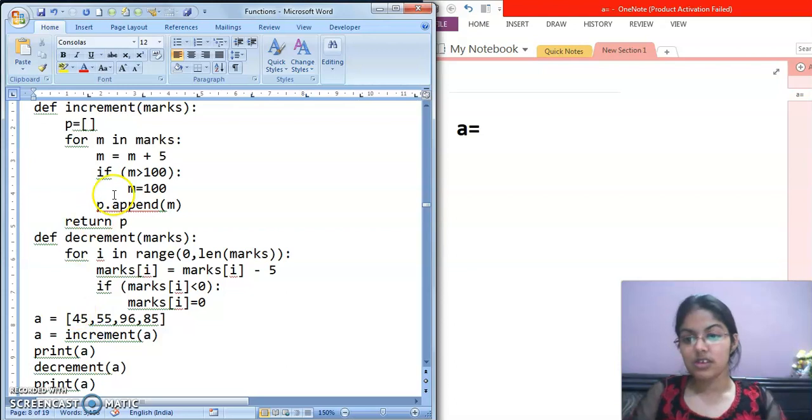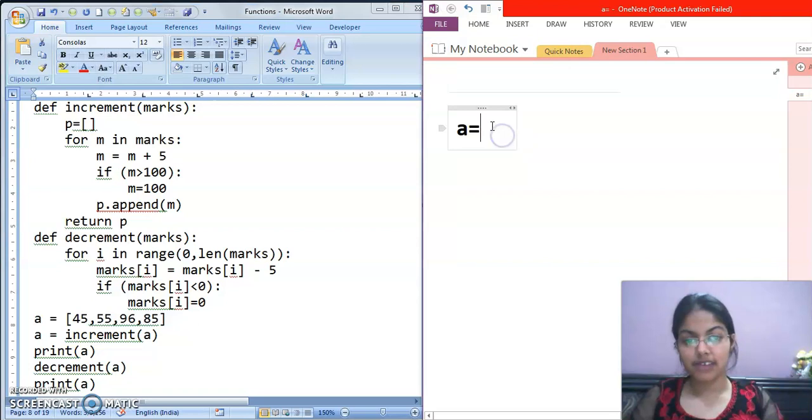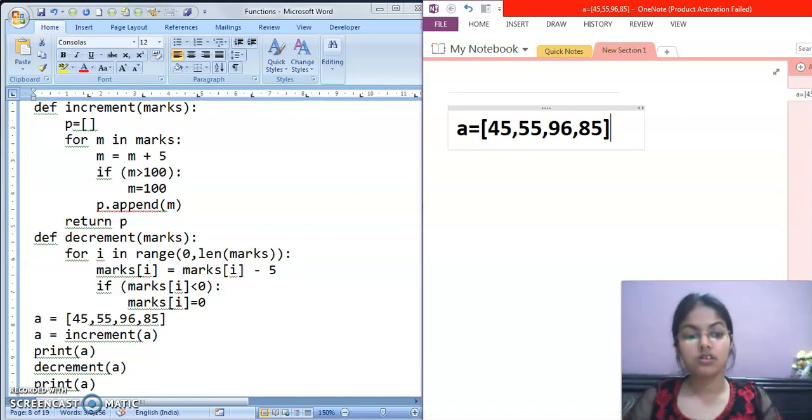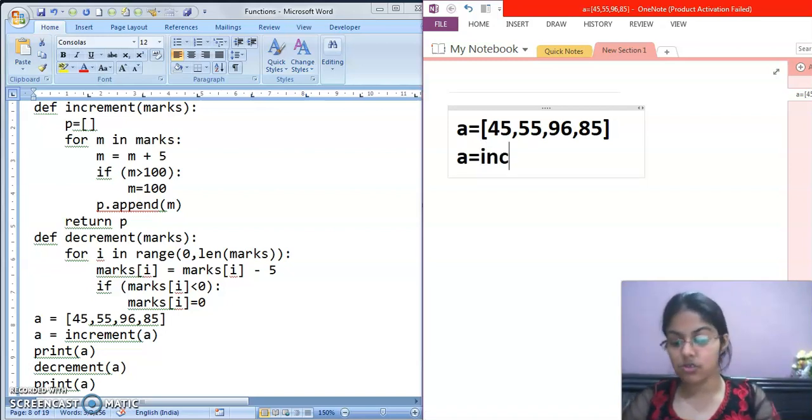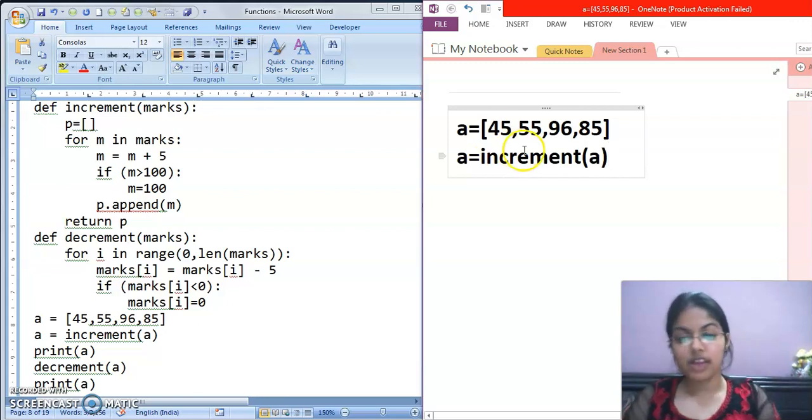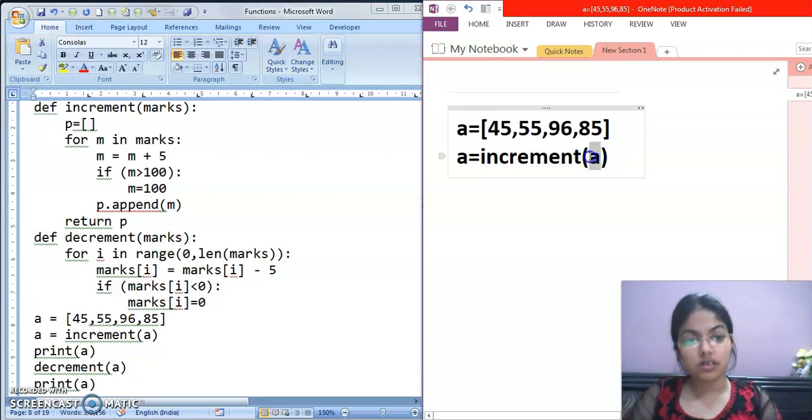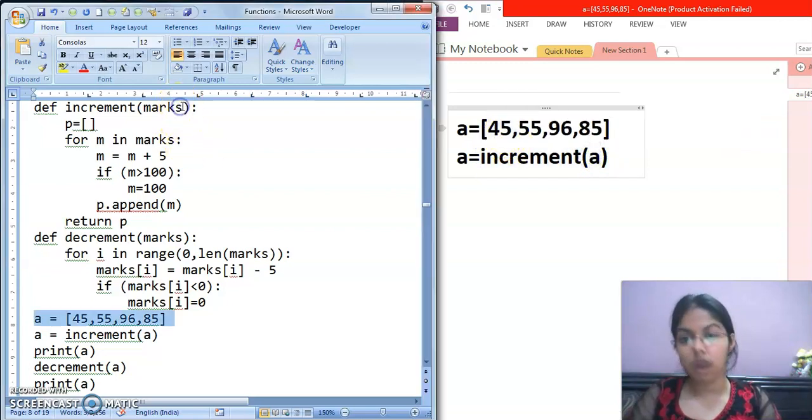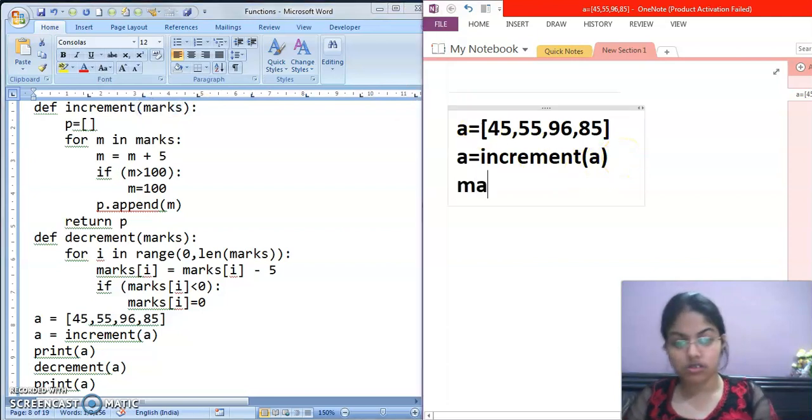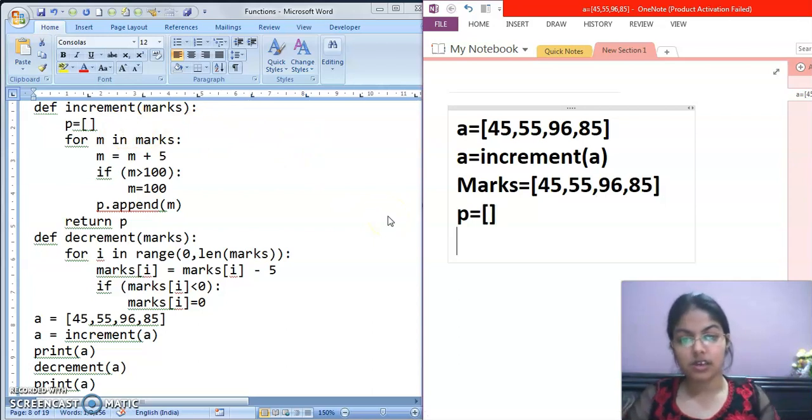We will start with this question. Now see here, increment function is given and one decrement function is given. And this A list is given with values, I am writing it here. A equals to 45, 55, 96 and then 85. These values are given and A equals to increment of A. That means we are calling the function increment and passing this list A in marks. So that means now this marks variable also contains these elements. Now P equals to, P is an empty list.